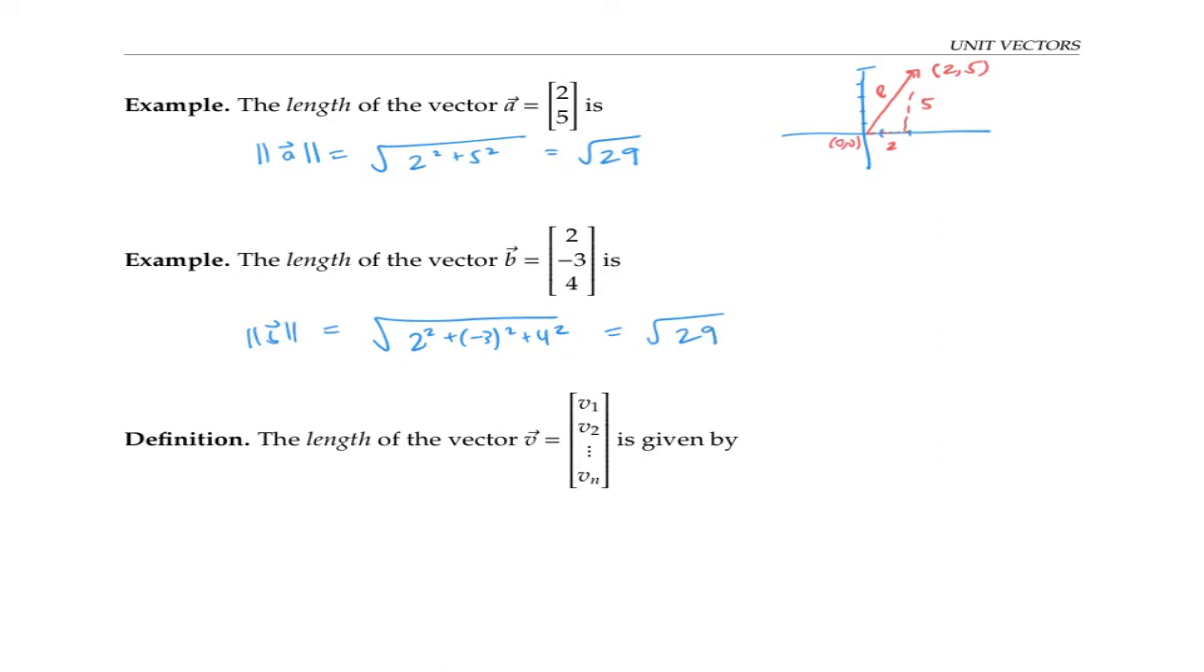You can also think of this expression for length in terms of the distance formula. If I draw this vector with its tail end at the origin and its tip at the point (2, -3, 4), then the length of the vector should be the distance between this point and that point.